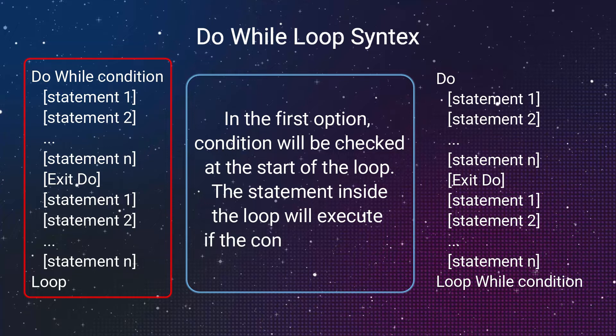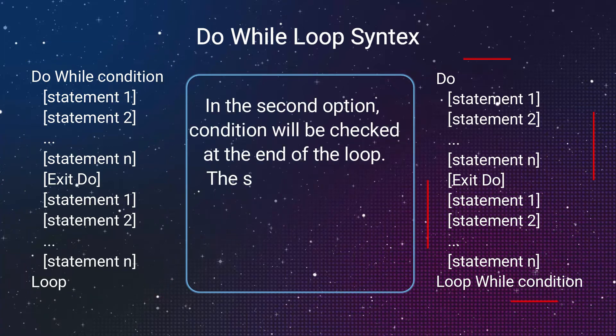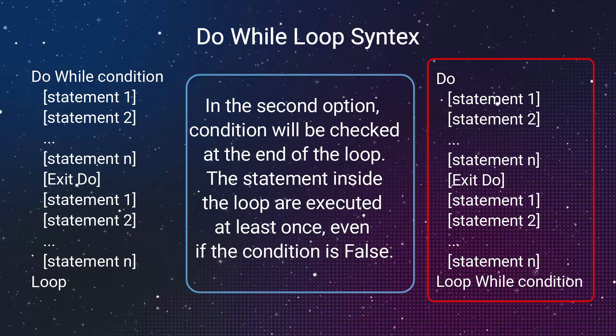In the first option, condition will be checked at the start of the loop. The statement inside the loop will execute if the condition is true. In the second option, condition will be checked at the end of the loop. The statements inside the loop are executed at least once, even if the condition is false.